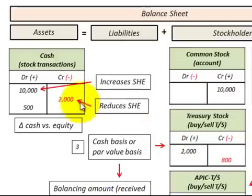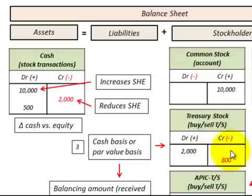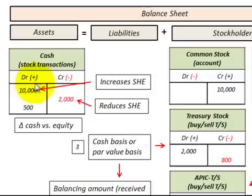Looking at it in terms of cash versus equity: when we buy back some outstanding common stock, we increase our Treasury account for that amount and decrease our cash for the purchase price of that common stock. So our reduction in cash reduces our stockholders' equity. Then when we reissue that Treasury stock, we reduce our Treasury stock account and increase our cash account for the amount received from the sale. The increase in cash increases our stockholders' equity. So in terms of cash versus equity, the Treasury stock is a contra account as well.